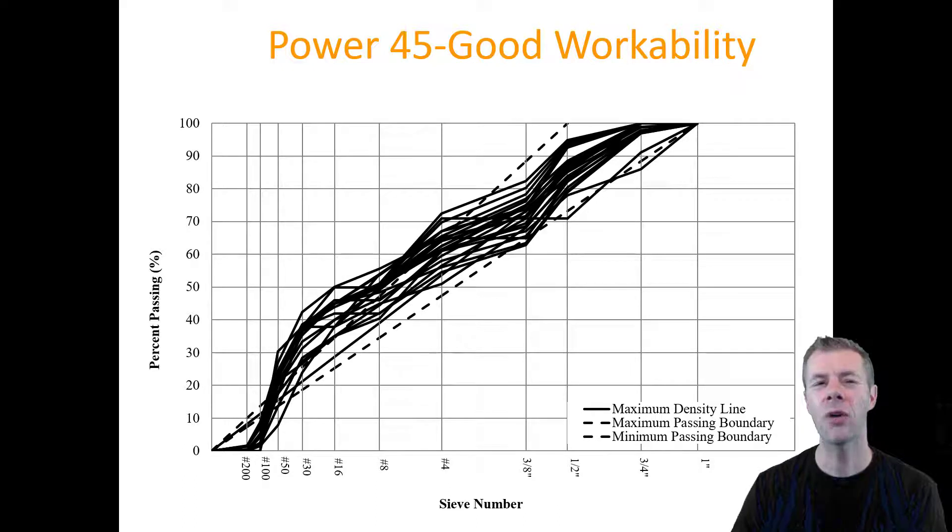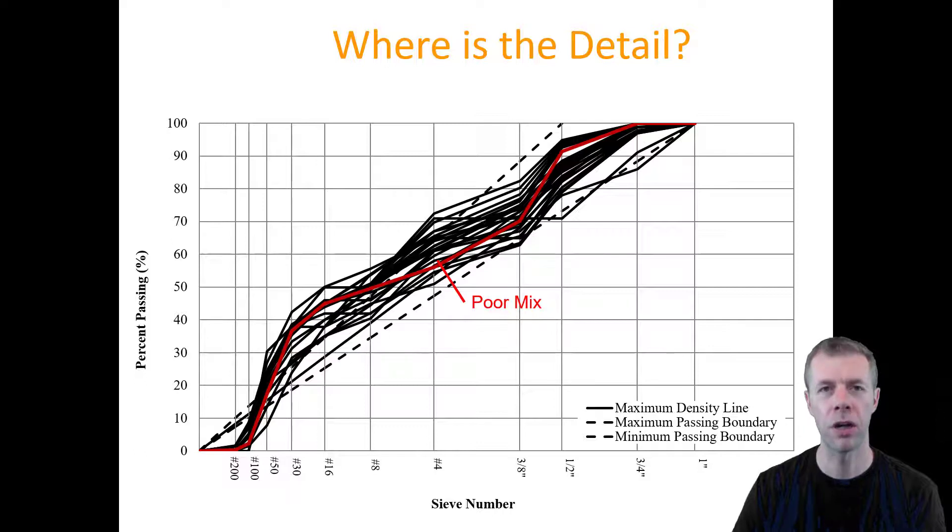Yet, how do we really compare these to one another? Is there a big difference between the moderate, the good, and the poor? For example, in this sea of black, sea of good performing mixtures, which a number of them are within the actual boundaries, but yet they're not on this ideal black line, this ideal density line that you're supposed to shoot for when you're designing these concrete mixtures. They're all over the place. And look, this red line is a poor mixture. Can you really tell the difference between this poor mixture and all these other ones that have great performance?